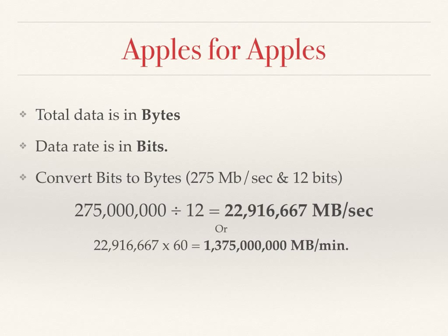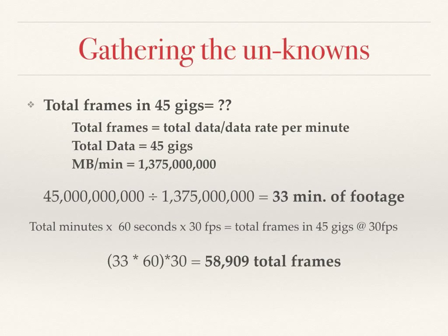That gives us 1.37 gigabytes per minute — that's a lot of data. Now, total frames equals total data divided by data rate per minute. We know the total data is 45 gigs, and the data rate is 1.37 gigs per minute. So 45 gigs divided by 1.37 gigabytes equals 33 minutes of footage. Total minutes times seconds times frames per second gives total frames in 45 gigs. So 33 minutes times 60 times 30 equals 58,909 total frames in 45 gigs of data.